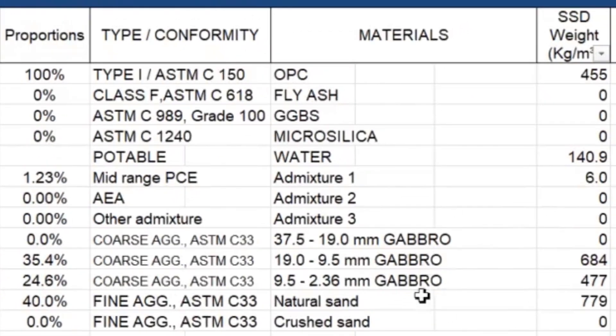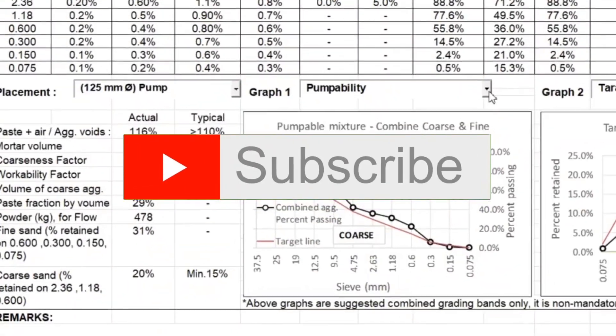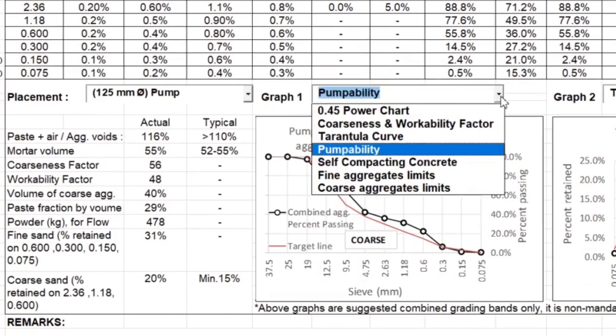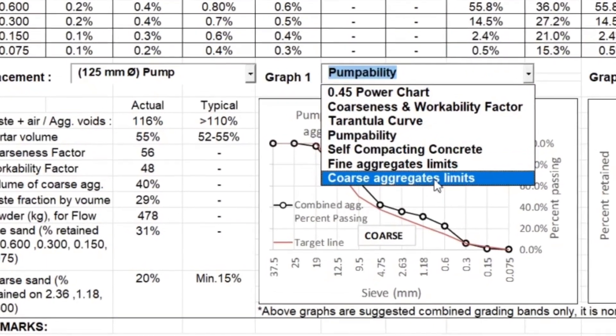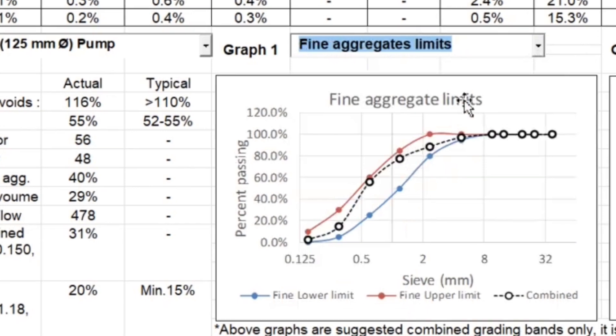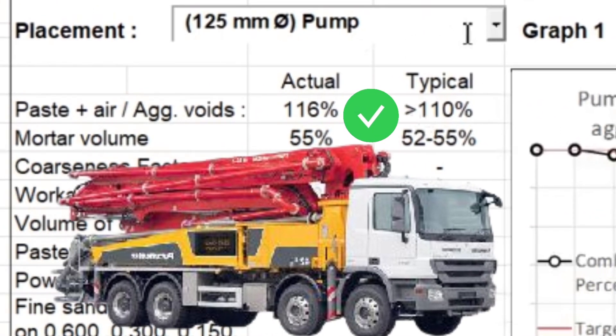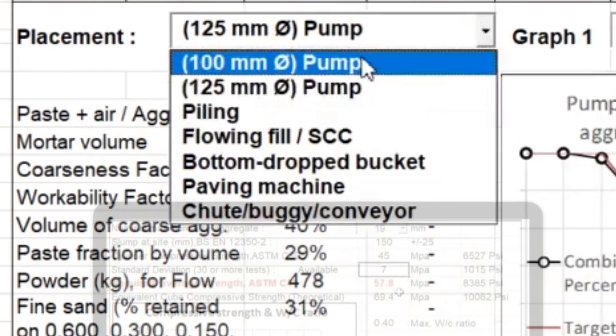Now this is the final design materials weights. And let's review the other parameters. The pumpability graph is okay. Look at the coarse aggregate grading. It's within the limits. Fine aggregate is also within the limits. And also parameters such as paste and mortar for concrete placement using pump with 125 mm diameter.